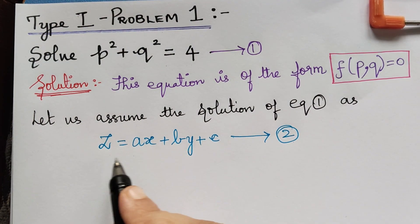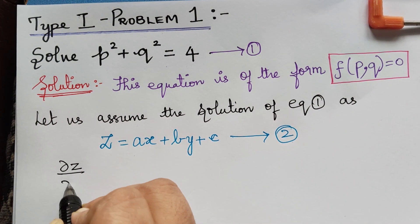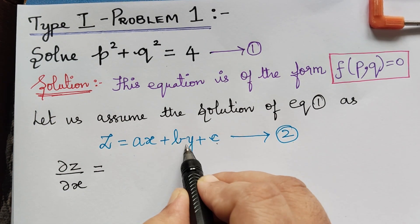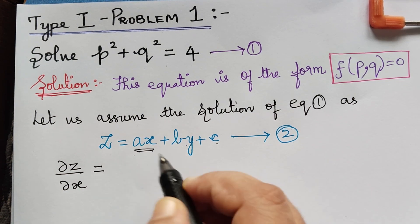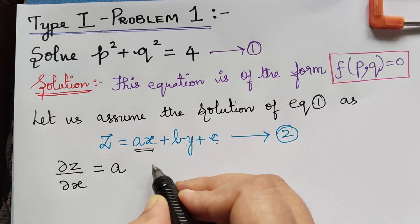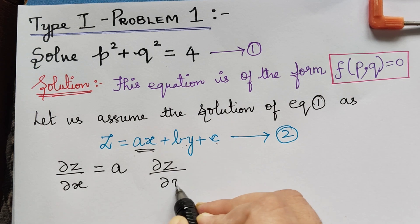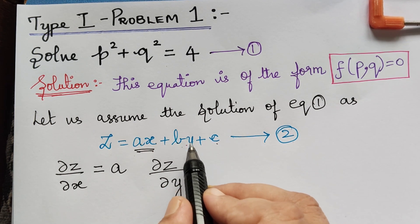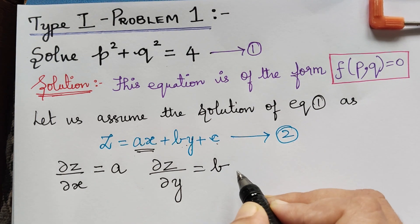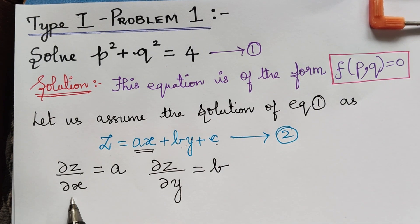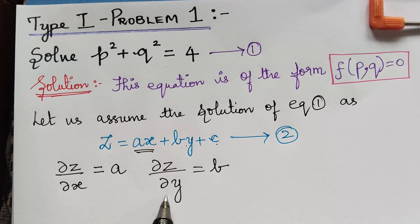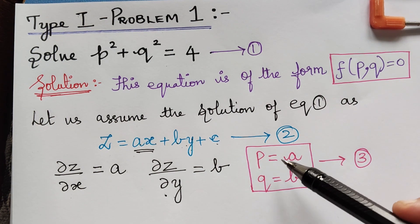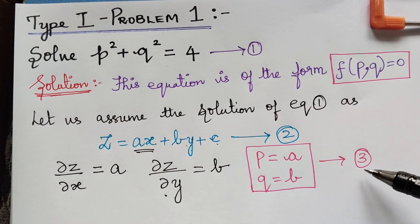If we differentiate z partially with respect to x, the by and c terms become 0 and the differentiation of ax gives a. Similarly, partially differentiating with respect to y, ax and c become 0, and differentiating by gives b. Since dou z by dou x is p and dou z by dou y is q, we get p equal to a and q equal to b, marked as equation 3.